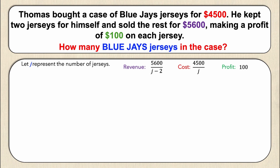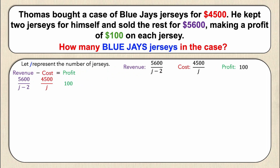We know the relationship between revenue, cost, and profit is: revenue minus cost equals profit. Now that I have an expression for each of these, I can substitute them in. So the equation becomes: five thousand six hundred divided by (j minus two), minus four thousand five hundred over j, equals one hundred.